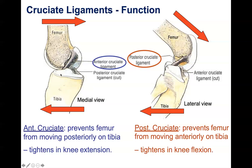Conversely, if you're standing on the floor — a closed kinetic chain — the ACL prevents the femur from moving posteriorly. If you were to bring the femur posteriorly, you can imagine this ligament would get stretched. On the flip side, the PCL would actually slacken because the PCL runs in the opposite direction.